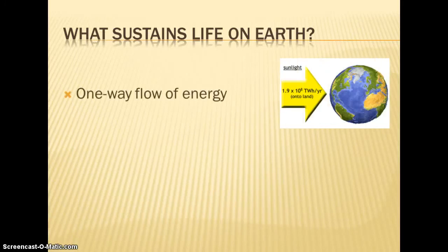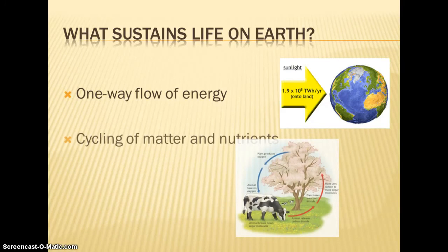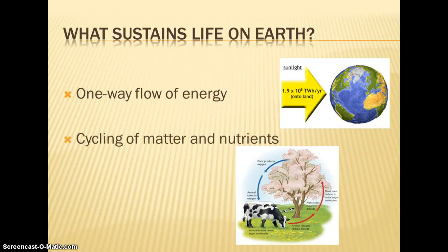Life on Earth is sustained by solar energy. That's what drives photosynthesis. We are a closed system, so we have a one-way flow of energy. We cycle our matter and nutrients. Energy cannot be cycled. Remember from our first and second laws of thermodynamics that energy, once it's used, is degraded to a lower form, which is usually going to be heat. Gravity is what drives our biogeochemical cycles, the cycling of matter and nutrients.